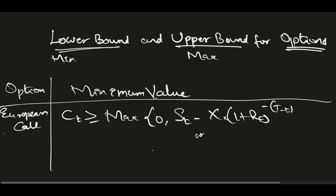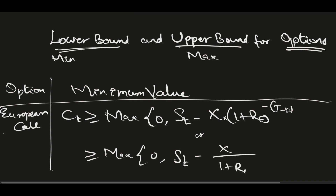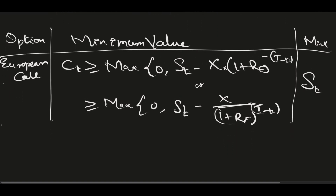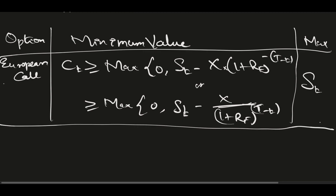Alternatively, I can write this as greater than or equal to maximum of 0 or spot minus strike discounted by (1 plus risk-free rate) raised to (capital T minus smaller t) — no negative sign here because I'm using discounting. The maximum value will be the spot price at time t.